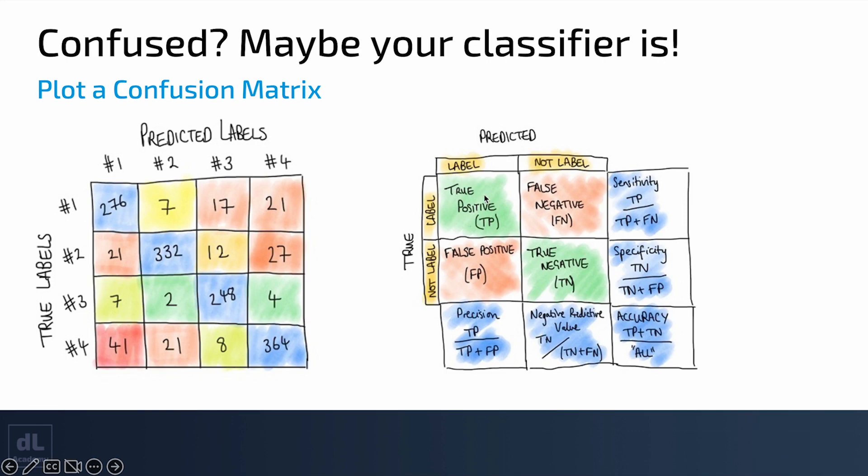In the case where we've predicted a positive value and it was a positive value, these are the true positives. True negatives are the number that we've correctly predicted as negative.